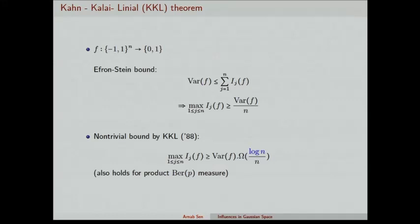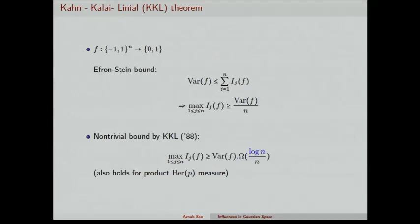In general, if you have a Boolean function defined on the hypercube, the Efron-Stein bound — or the Poincaré inequality, whatever you call it — tells you that the variance of f is bounded by the sum of the influences. This gives that the maximum influence is bounded by the variance of f divided by n. In one of the most fundamental results in discrete harmonic analysis, Kahn, Kalai, and Linial proved that you can actually put a log n factor in the lower bound. This result also holds for the product Bernoulli measure, using the same definition.